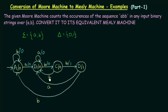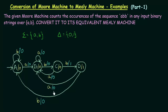This A is going to state B, which has output 0, so we give 0 to this A. And this A is going to B again with output 0, so this A will also have a 0. And this B is going to state A with output 0, so this B will also have 0 as the output. Now we have associated the outputs to the transitions.